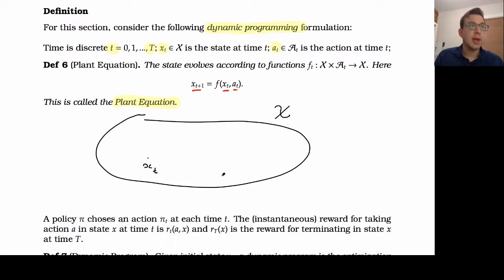So we could think of us living in some big set of states script x. Then given where we are at time t, we take an action and the action could be to go left, could be go to right, could be to go up, could be to go down. And then given the action that we take, that determines where we next end up.